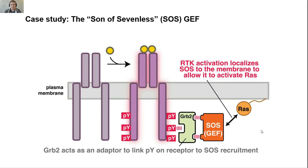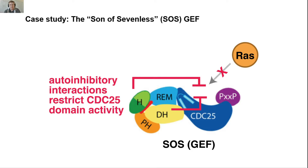In addition to simply recruiting SOS to the membrane, which does have a profound effect on its activity, there are also autoinhibitory interactions in the son of sevenless GEF that would ordinarily restrict the CDC25 domain's activity against RAS. So if you took this protein in vitro and mixed it with RAS, you'd find that it doesn't do a very good job of activating. That's because all these different domains are blocking the critical sites on the CDC25 molecule that are needed to activate RAS.